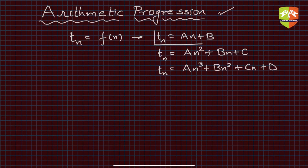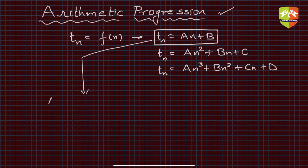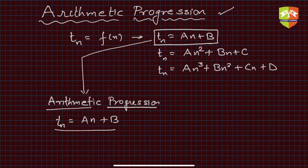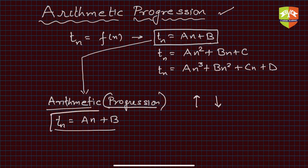Henceforth we are going to analyze one particular variety — the linear one — and this is what we study under the heading arithmetic progression. Any sequence whose nth term can be expressed as a linear function of n will be called an arithmetic progression. As the name suggests, progression means continuous change — it can be positive or negative, meaning the sequence can increase as well as decrease. Since it is a linear function, the rate of increase is always the same.